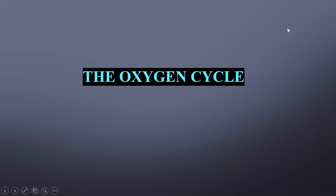Today we are going to talk about the oxygen cycle. A cycle is: from where you start, at the same place you have to end. Just as carbon dioxide from the atmosphere was used by plants and then released through different processes, in the same way we need to check which processes use oxygen and which release it back into the atmosphere.